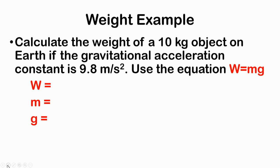So let's do a weight example. Calculate the weight of a 10 kilogram object on Earth if the gravitational acceleration constant is 9.8 meters per second squared. Use the equation W equals m times g. Well, what's our W? Well, we don't know. It's asking us to calculate the weight. Next, let's find mass out of this practice exercise. Which one of these numbers is a mass? Yep, that's right. It's 10 kilograms. Now, what is the gravitational acceleration constant? You got it. It's 9.8 meters per second squared.